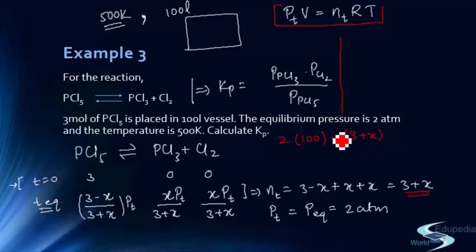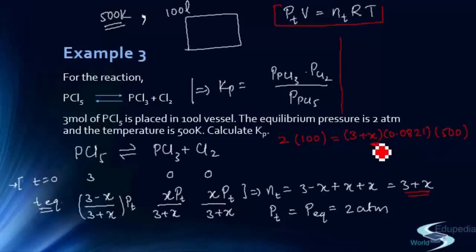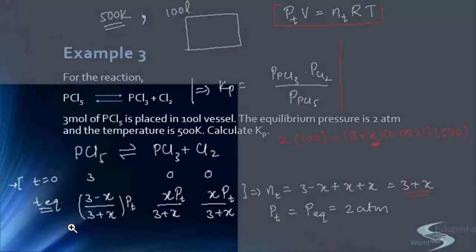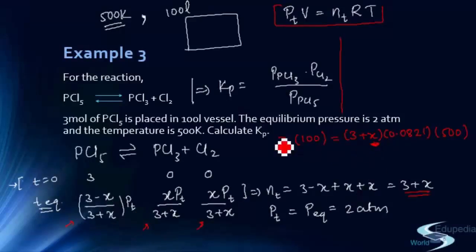Since pressure is in atm and volume is in liters, we use R = 0.0821 L·atm/(K·mol). Temperature is 500 K. Solving the equation gives x, which we then substitute into the three mole-fraction expressions along with Pt = 2 atm to get the exact value of Kp.